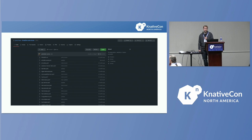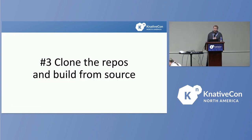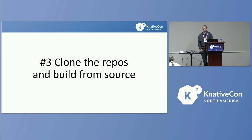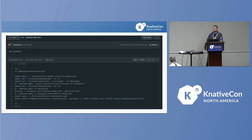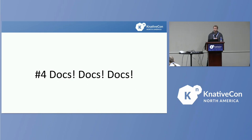Number three: clone the repos and build from source. If you're going to be contributing, you'll do this quite a lot, so it's good to learn how to do it early. I found a bug in Apache Spark a couple years ago but couldn't get it to build locally, so I lost out on that commit. Getting that workflow set up early — I have a little script where I can one-line deploy from source — is a very useful tool to have.